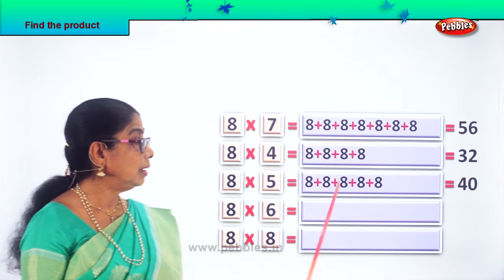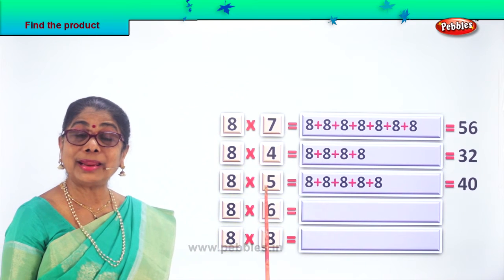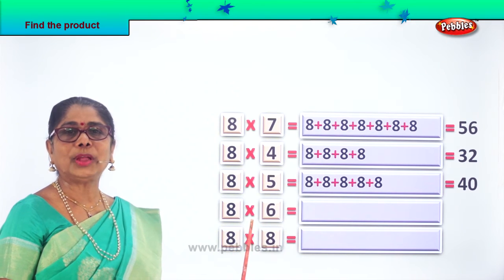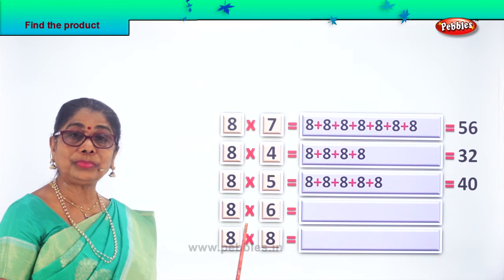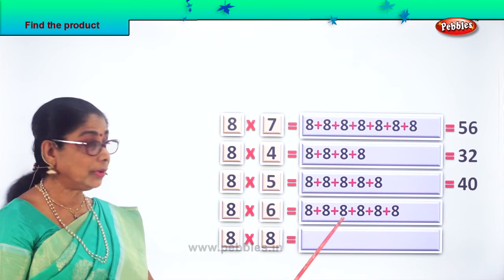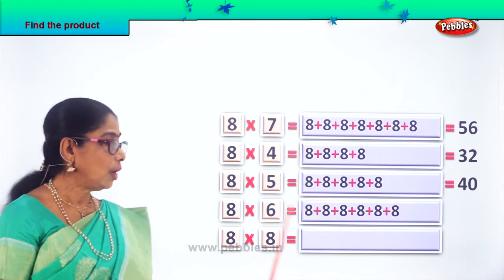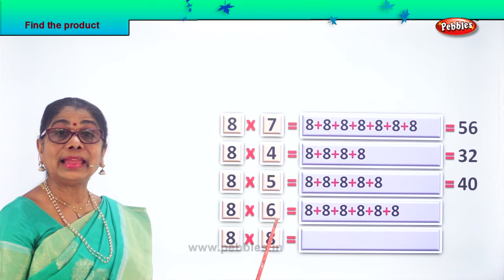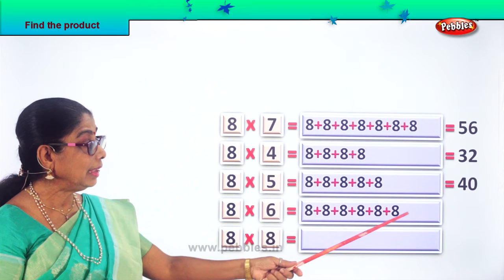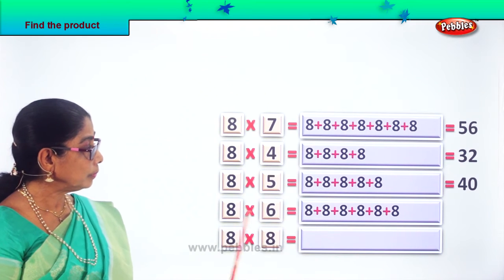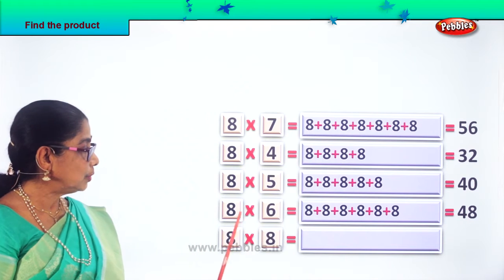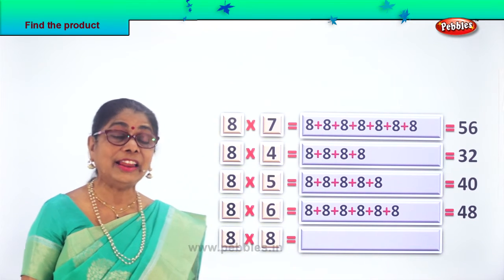Good. So you learn to find the product using repeated addition. What are 8 sixes? What is the product of 8 into 6? Now we write 8 six times: 1, 2, 3, 4, 5, 6. What are 8 sixes? The product of 8 into 6 gives you the answer — 8 sixes are 48.